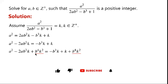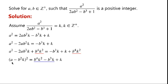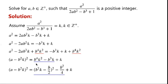So we add b to the power of 4k squared on both sides of the equation. The left-hand side can now be written as (a minus b squared k) squared. On the right-hand side of the equation, we have b to the power of 4k squared minus b cubed k plus k.